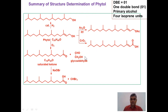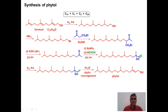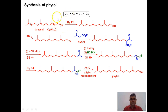The laboratory synthesis of phytol is another piece of evidence for the structure of the phytol molecule. Phytol contains 20 carbon atoms, so the synthesis is accomplished starting from farnesol, which has 15 carbon atoms. Farnesol is a commercially available starting material, so the maximum structural complexity of phytol is already accommodated in farnesol. The remaining 5 carbon atoms are provided by ethyl acetoacetate, which contributes 3 carbons, and acetylene, which provides 2 carbons.